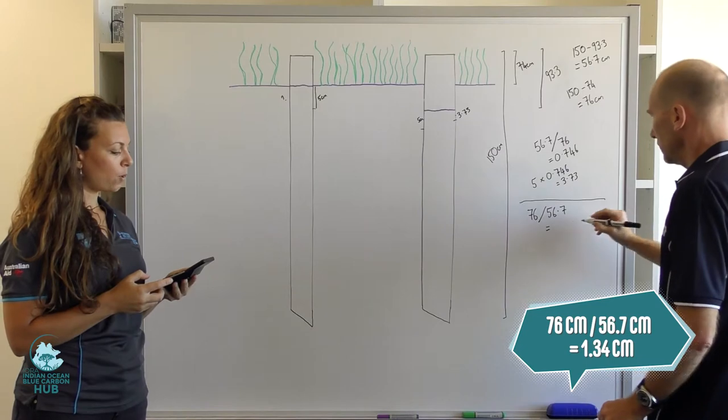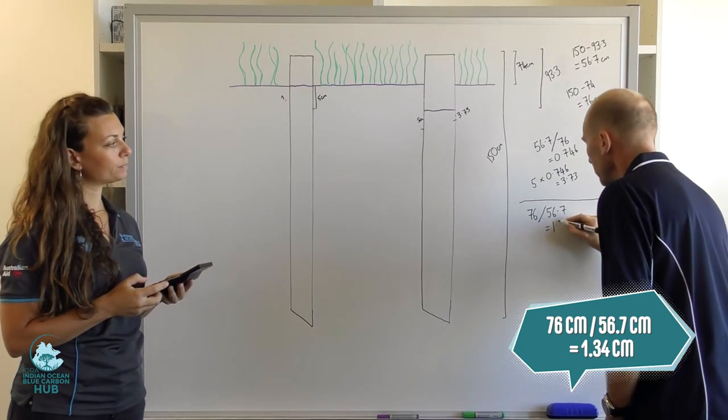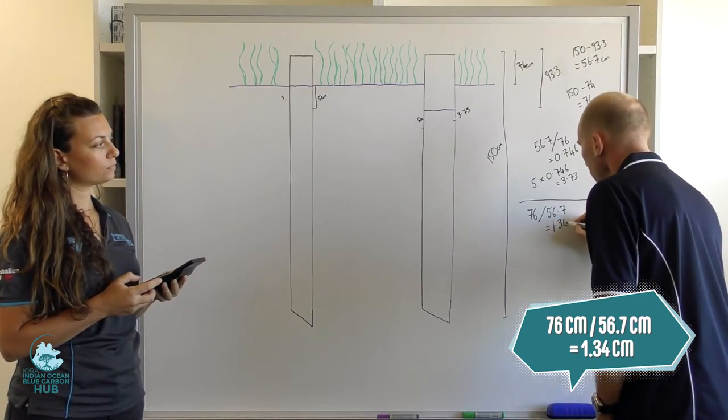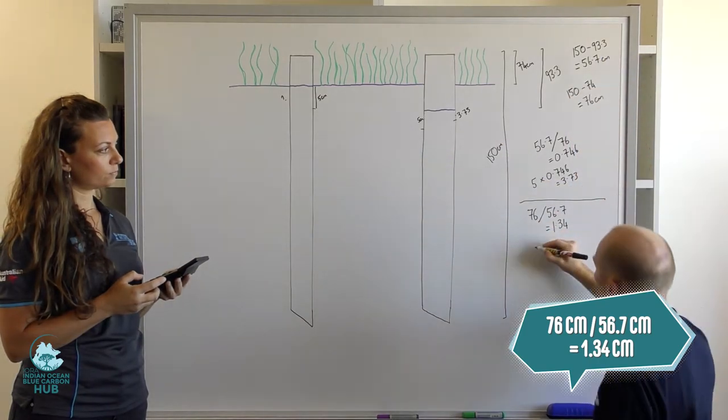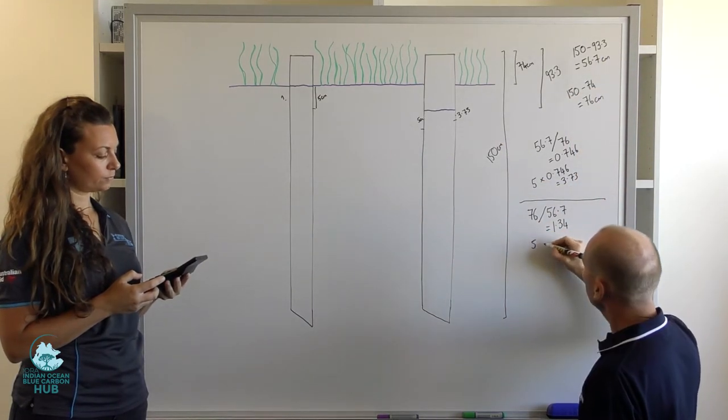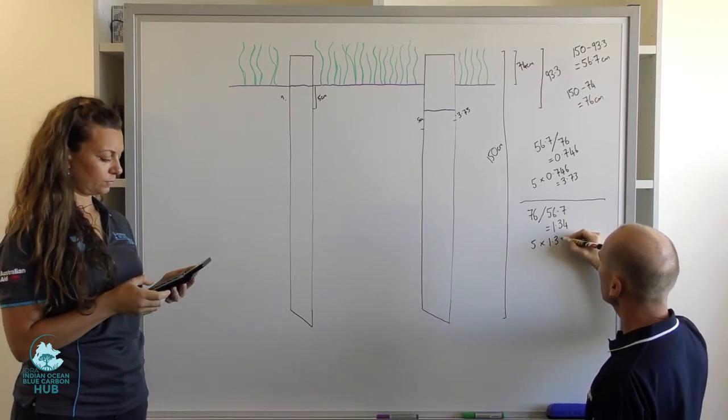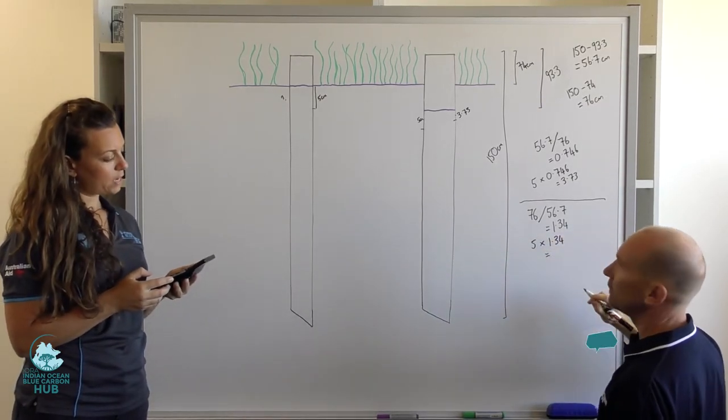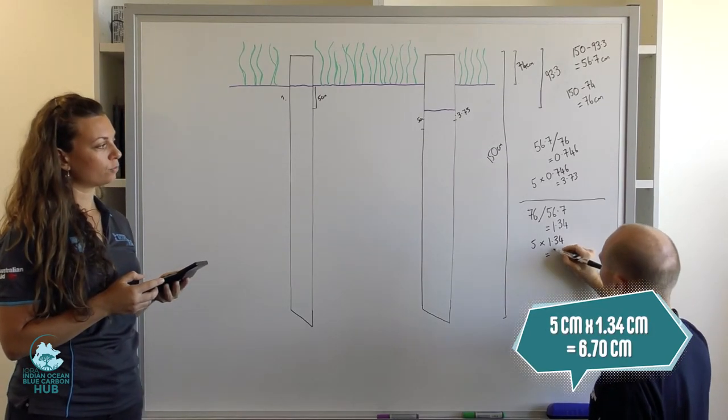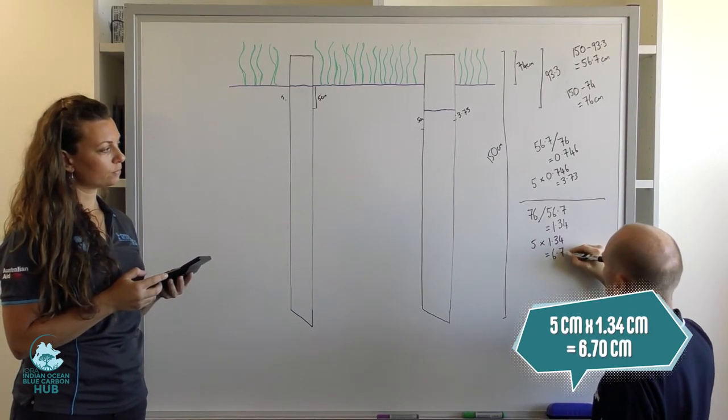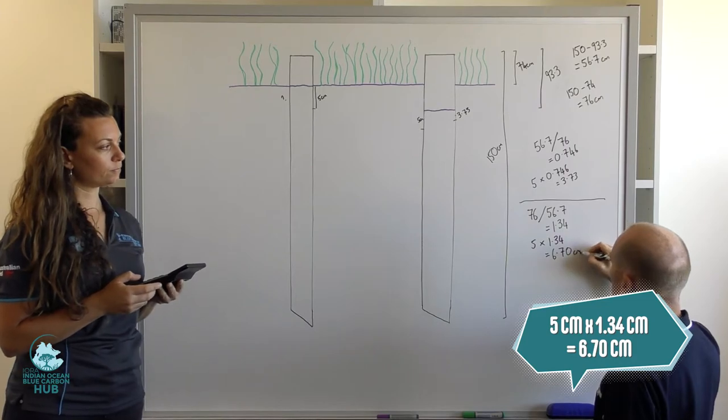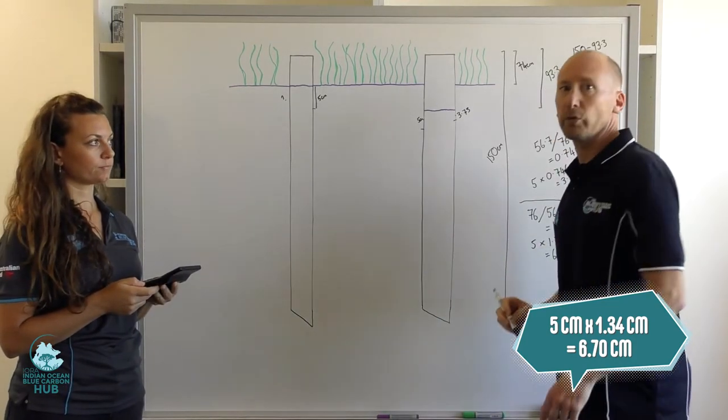And we apply that to our 5 centimeter slice. So 5 times 1.34 gives us an equivalent of 6.70 centimeters in our uncompressed core.